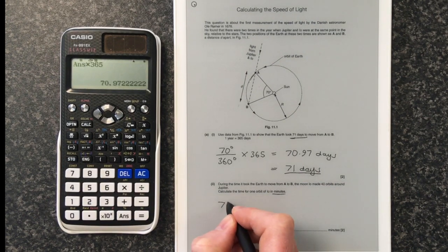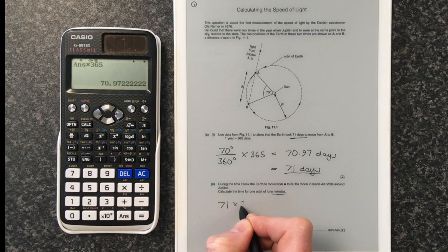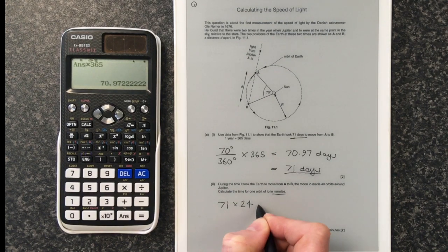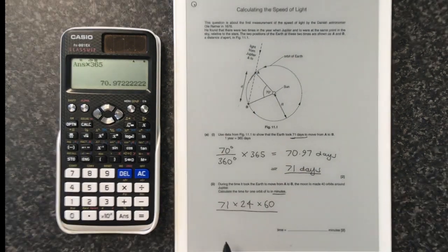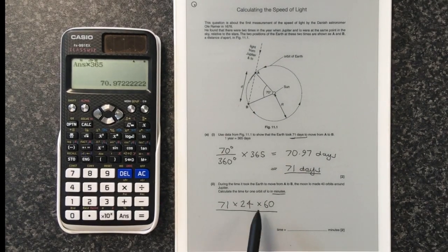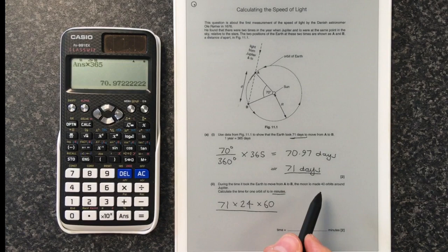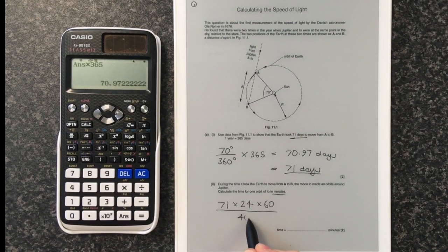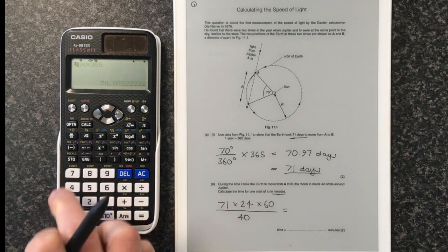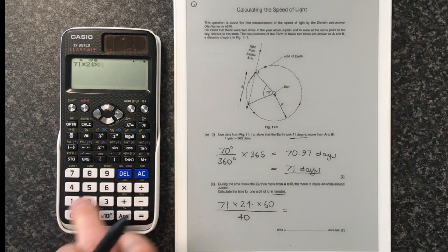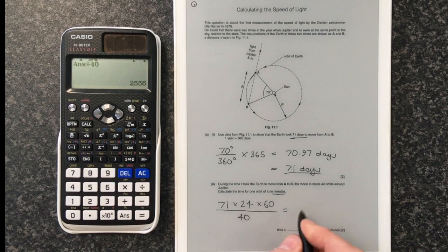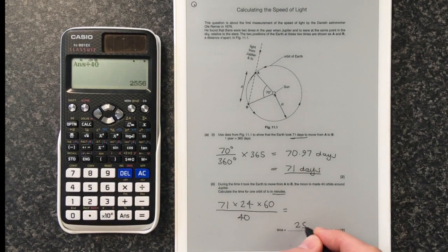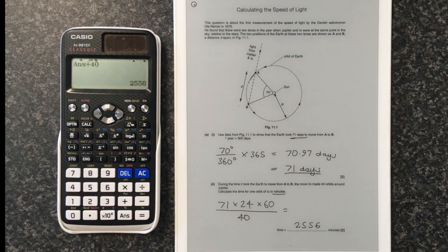So we know it was 71 days. There are 24 hours in a day and there are 60 minutes in an hour. So that is how long it took for the 71 days. But we want it for one orbit. So we'll divide that by 40. And the answer is 2,556 minutes. There we are with the right answer.